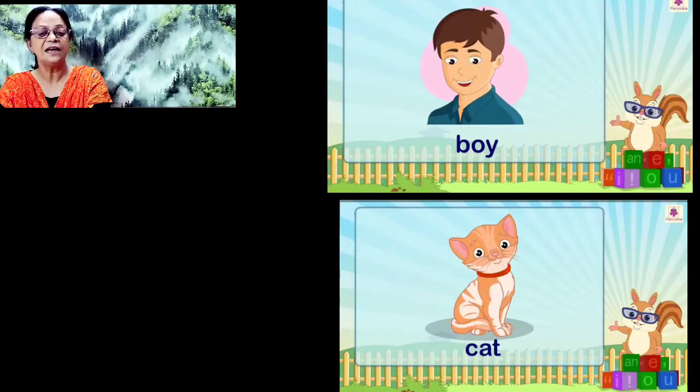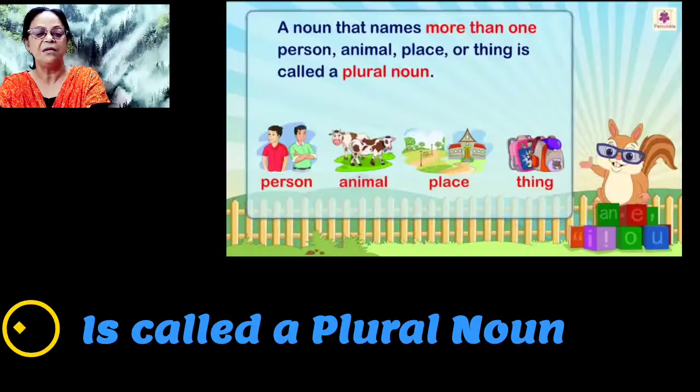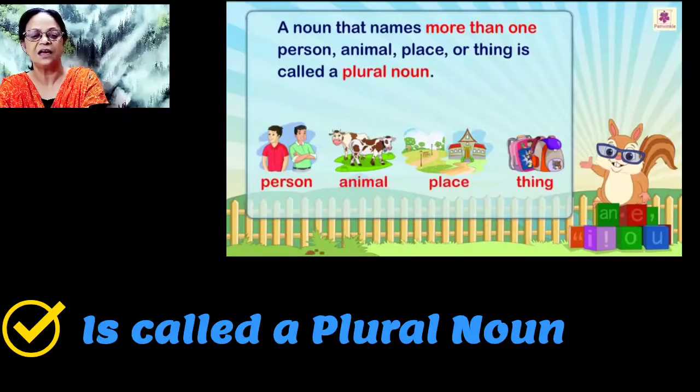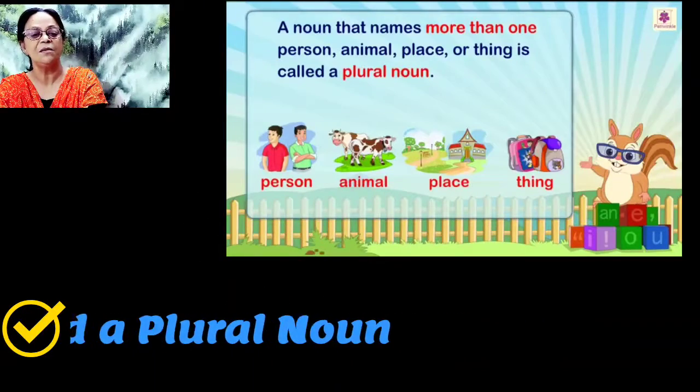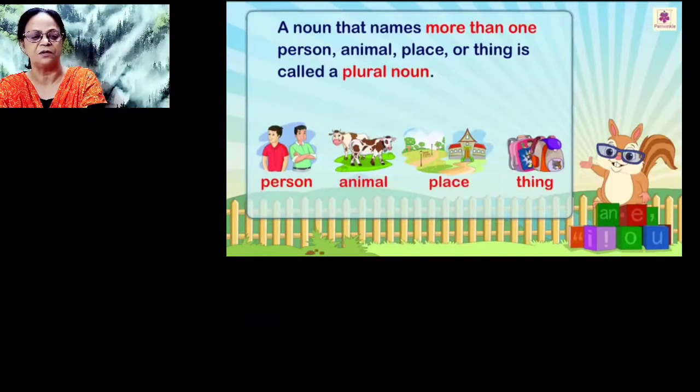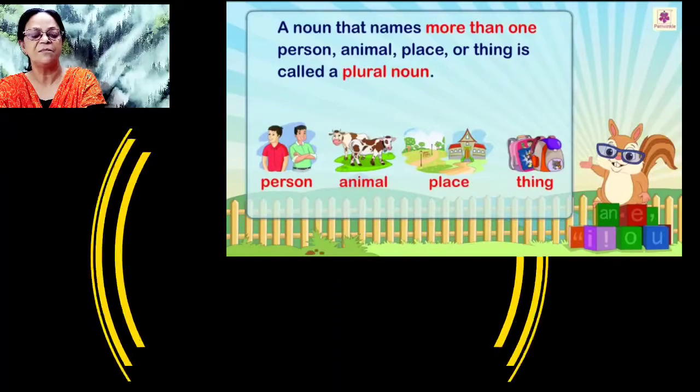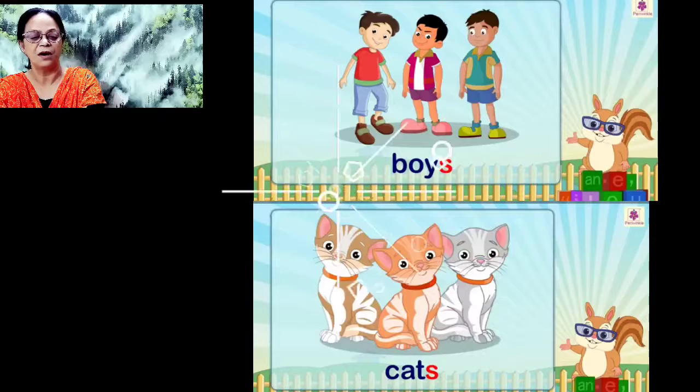A noun that names more than one person, animal, place or thing is called a plural noun. For example, boys, cats.